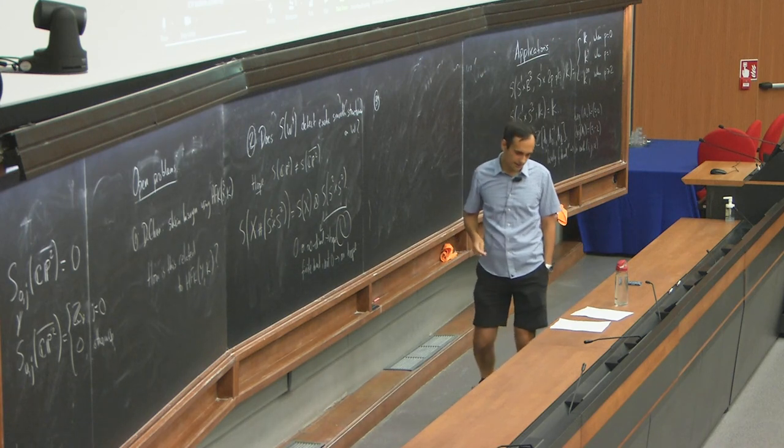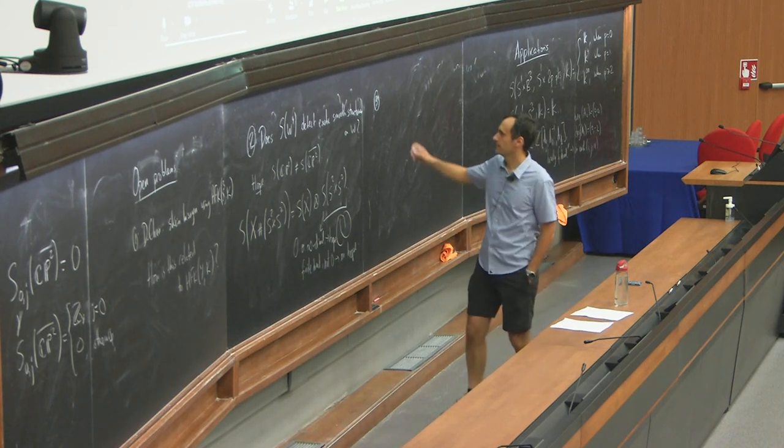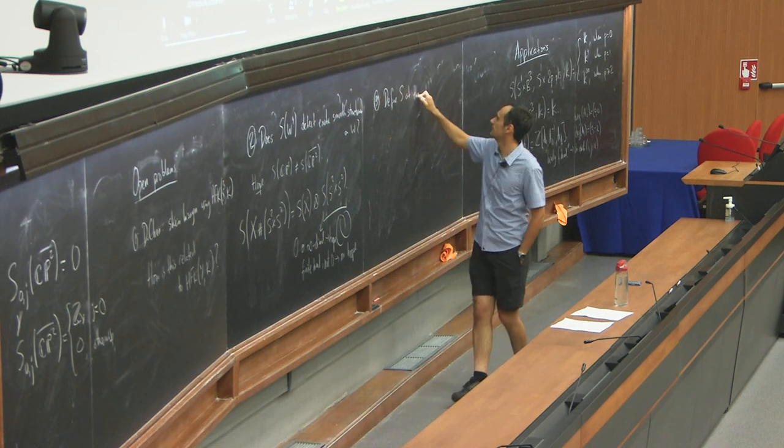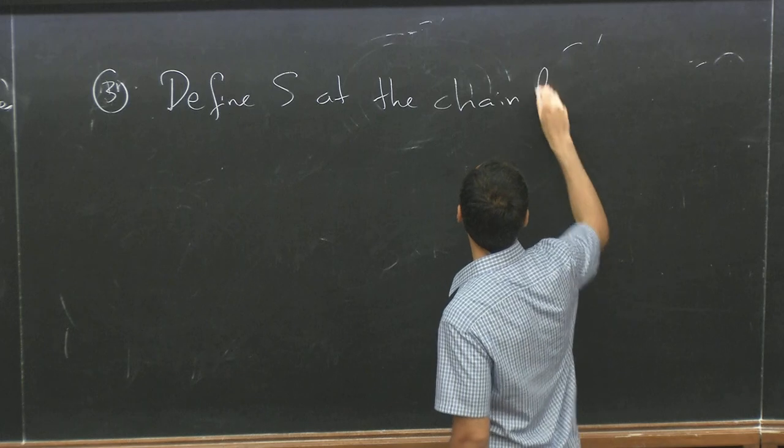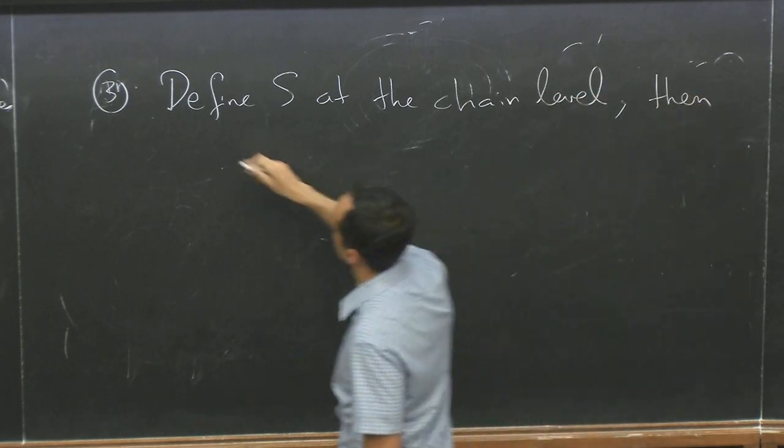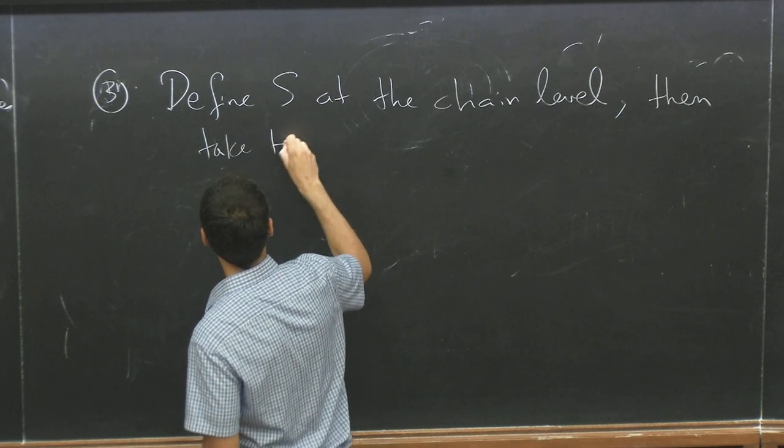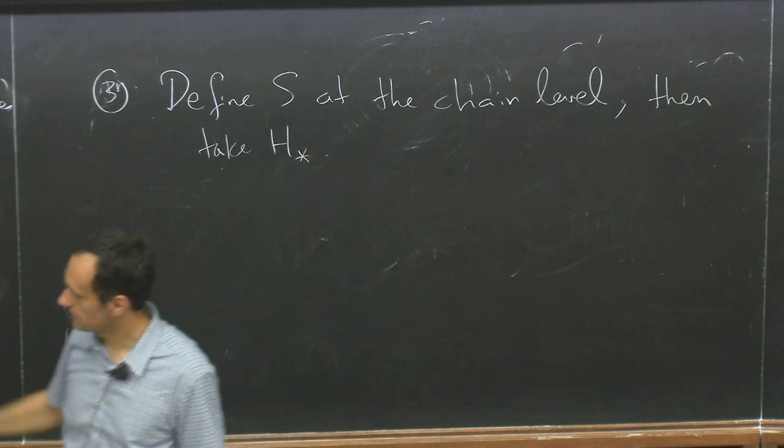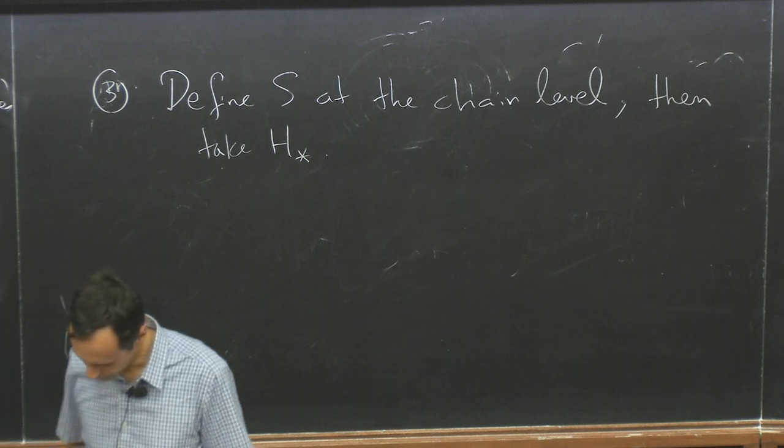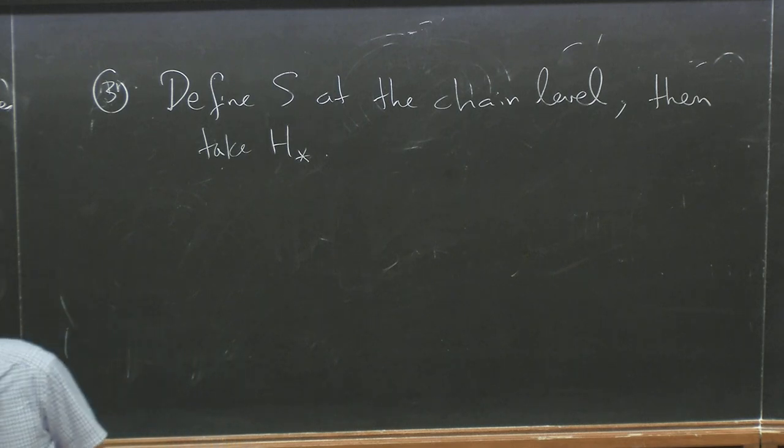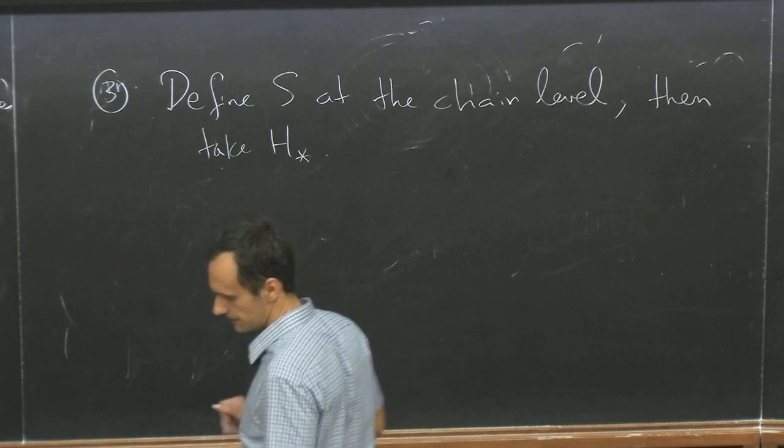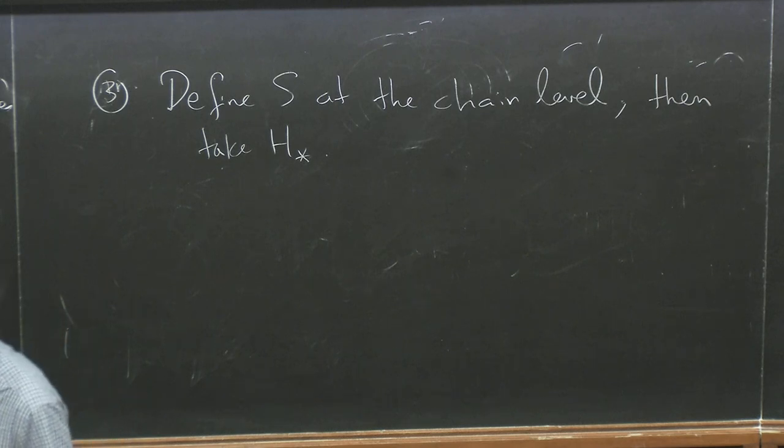So the final thing and maybe the most important thing is what Tom asked in the beginning. So, this is not quite the right thing. So, it would be good. So, here's the challenge is to define S at the chain level. And then take homology. So, here we had elements in Khovanov homology rather than in the chain Khovanov complex.